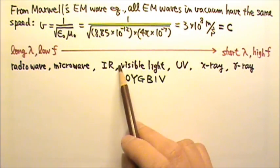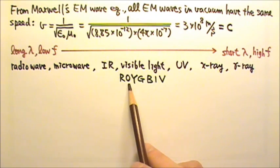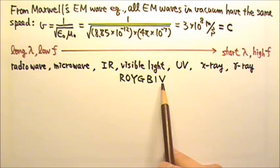Within the visible light, from the longest to the shortest wavelengths, we have ROY-GBIV: red, orange, yellow, green, blue, indigo, and violet.